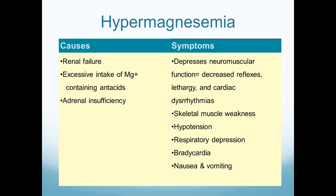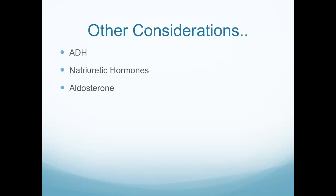A high magnesium level, on the other hand, is usually the result of renal failure. Since magnesium is a relaxant, hypermagnesemia results in skeletal muscle weakness, hypotension, and respiratory depression — essentially depressing all the systems of the body.